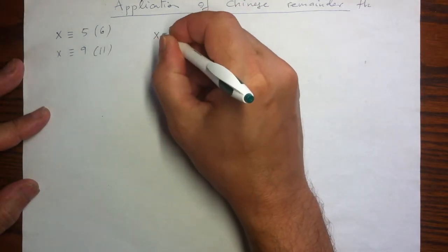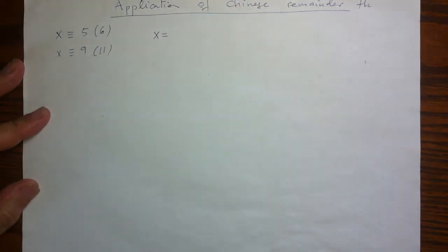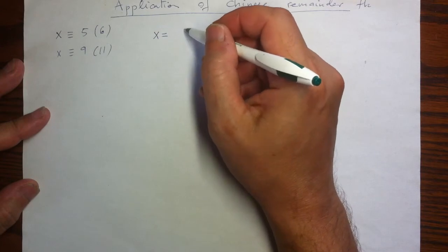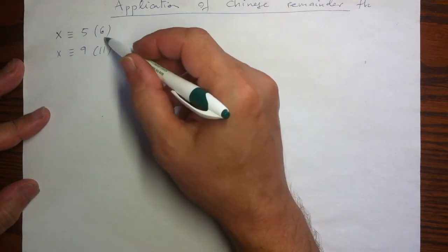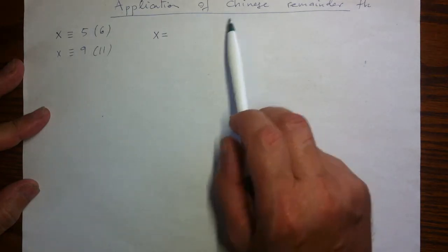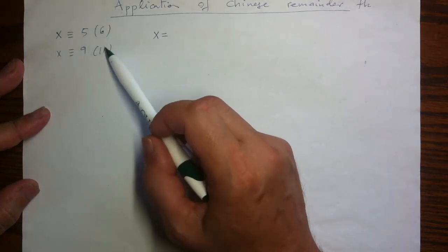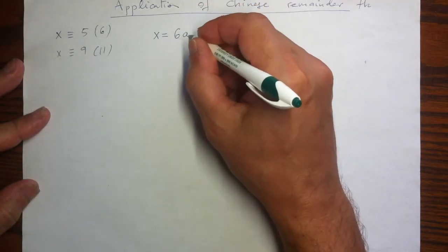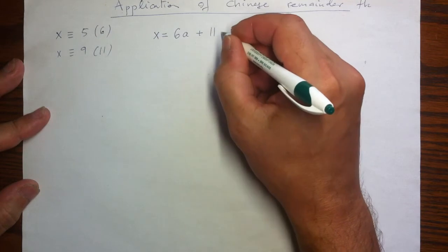The trick is to write this unknown x in a convenient form. So the convenient form will be a combination of 6 and 11. And the key condition which makes it applicable for Chinese Remainder Theorem is that the moduli 6 and 11 are coprime. So anything can be written as a combination of 6 and 11.